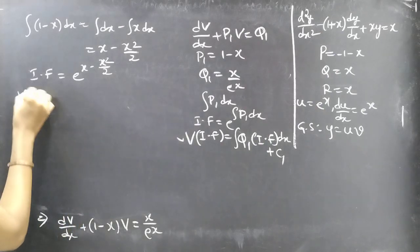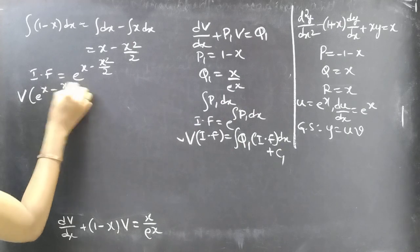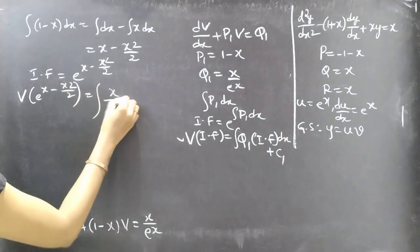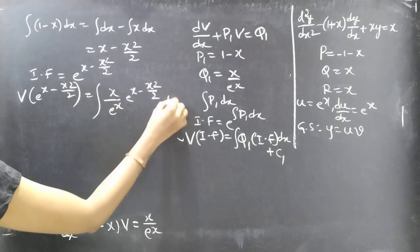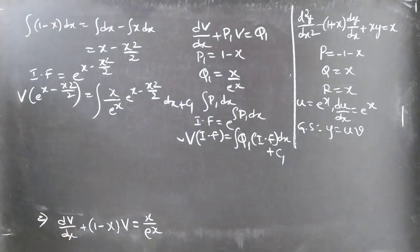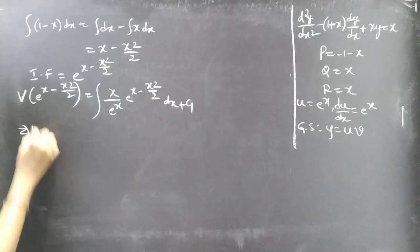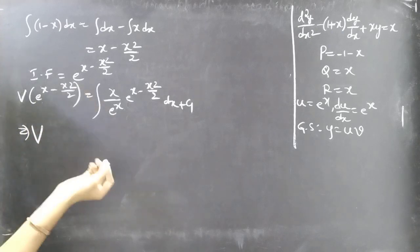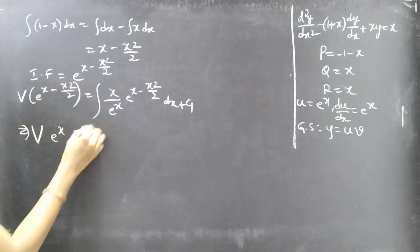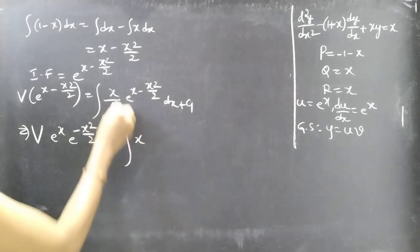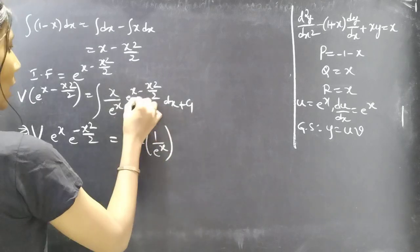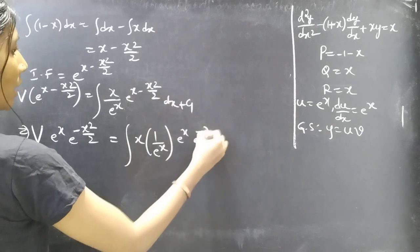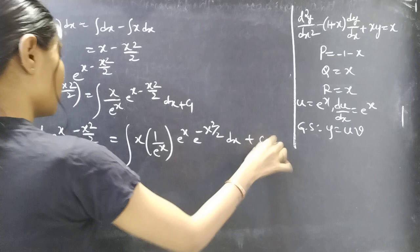Applying the formula: V · e^(x - x²/2) = ∫(x/eˣ) · e^(x - x²/2) dx + C₁. We split e^(x - x²/2) as eˣ · e^(-x²/2). The right-hand side becomes: ∫(x/eˣ) · eˣ · e^(-x²/2) dx + C₁.